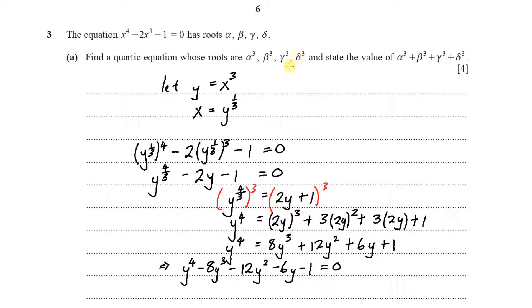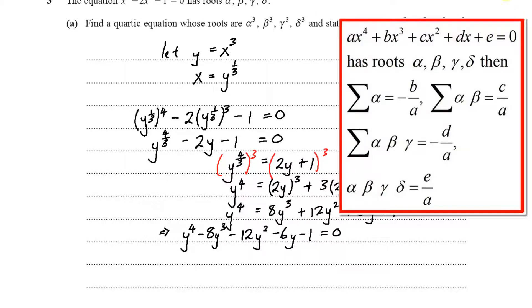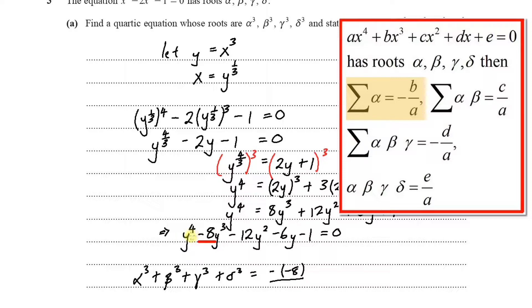The question also asks for the value of alpha cubed plus beta cubed plus gamma cubed plus delta cubed. For a quartic equation, the sum of roots equals minus b over a. Here b is the coefficient of y³, which is minus 8, and a is 1. So the sum equals minus (minus 8) over 1, which gives us 8.